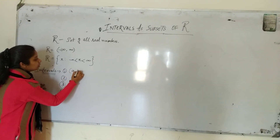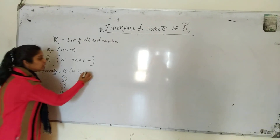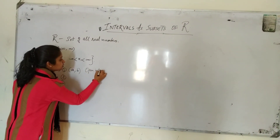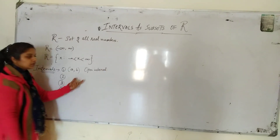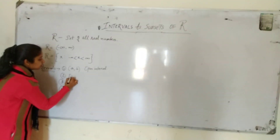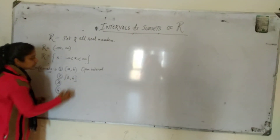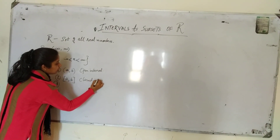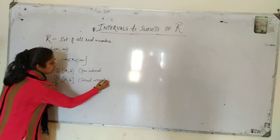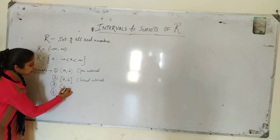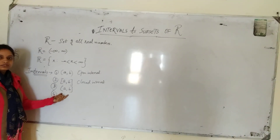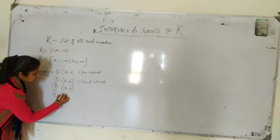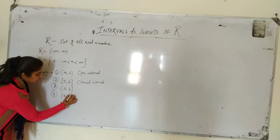The first type is (a, b), which is called an open interval. The second is [a, b], which is called a closed interval. The third is (a, b], which is semi-open. And lastly, [a, b) is semi-closed.